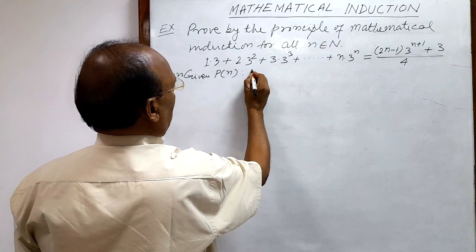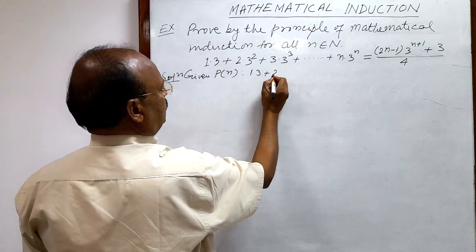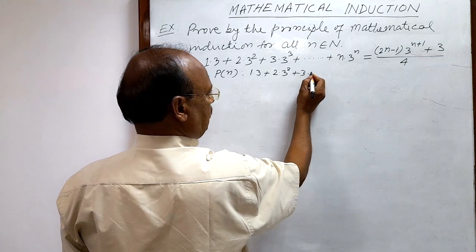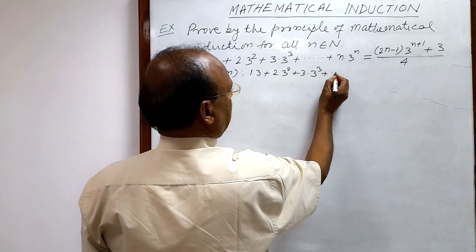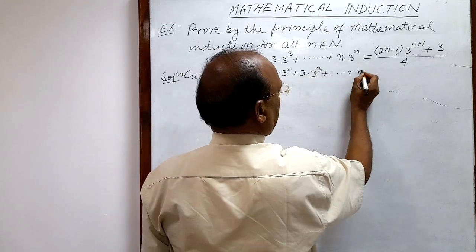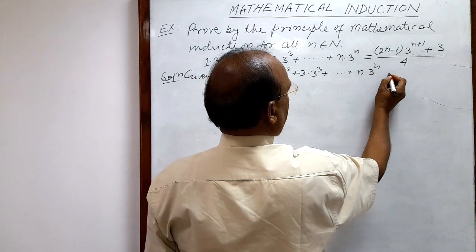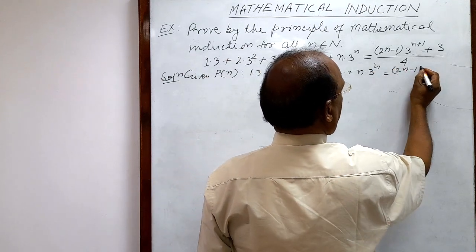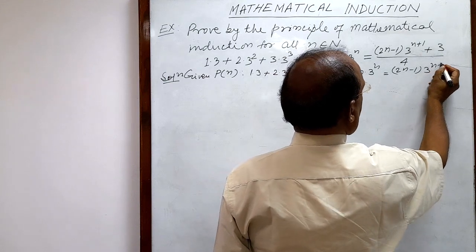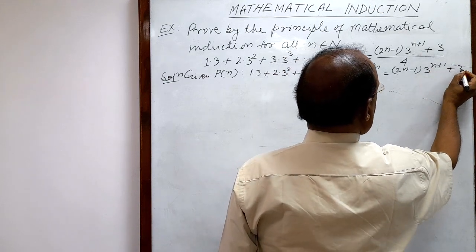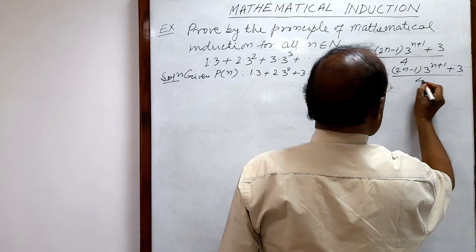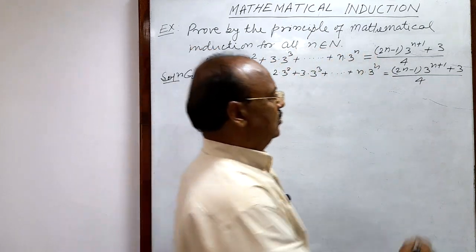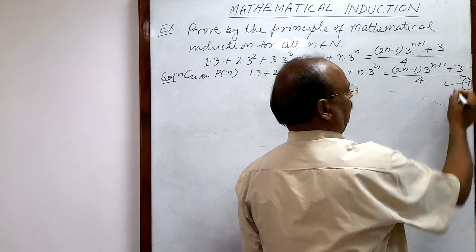So P(n) is: 1·3 + 2·3² + 3·3³ + ... + n·3ⁿ = (2n−1)·3^(n+1) + 3 divided by 4. Let us call this relation number 1.